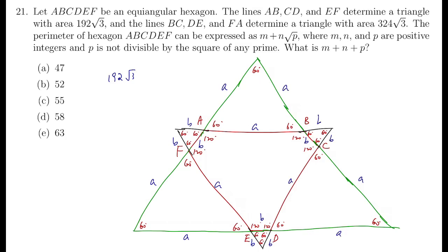Now for the small equilateral triangle, 192 root 3 is the area of an equilateral triangle with side length 2B plus A. So that's root 3 over 4 times 2B plus A whole squared. So simplifying, 2B plus A is equal to 16 square root of 3. Similarly, root 3 over 4 times 2A plus B whole squared equals to 324 root 3. So 2A plus B equals 36.